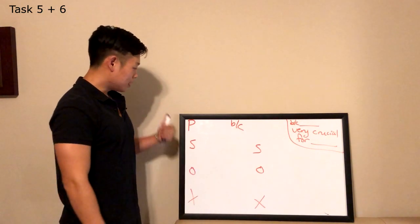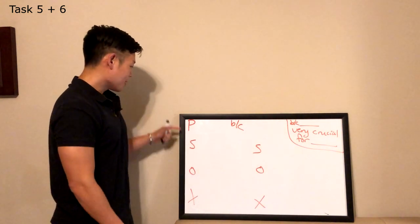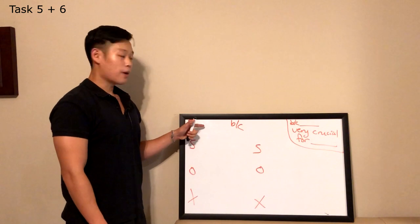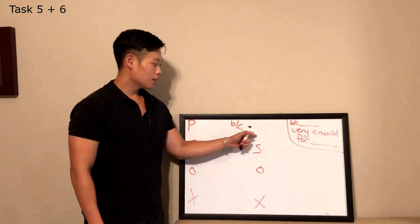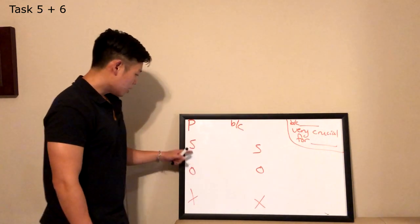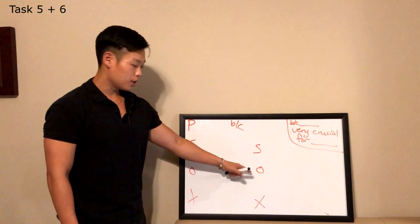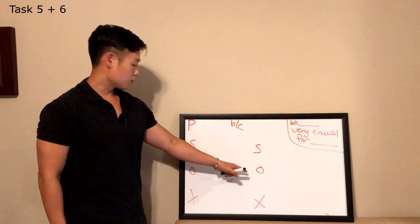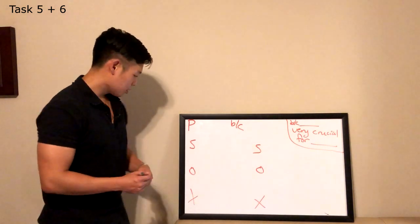So before I start the conversation, please take a look at the whiteboard and copy the note-taking diagram that you see. P stands for person, so you're going to write down the person who has a problem. BC means because, so over here you're going to be summarizing the problem. The S's stand for solution one and two, the circles are for the upsides, the positive aspects of the solutions, and the X's are for the downsides, the negative aspects.